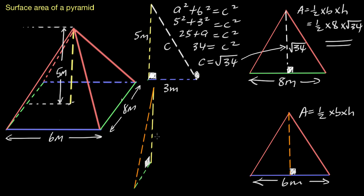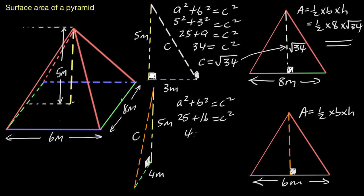Let's put our values on the extracted triangle: height is five meters, and half of eight gives us four meters. Using Pythagoras again: a² + b² = c². Five squared is 25, four squared is 16, so 25 plus 16 equals 41, meaning c equals the square root of 41. That is an exact answer so we'll leave it like that. The slant height for this face is the square root of 41.